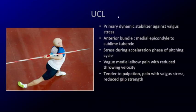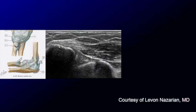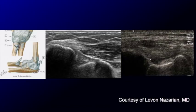The ulnar collateral ligament — deep to the common flexor tendon — can also be injured. We think of this as the Tommy John ligament, affected in pitchers, but javelin throwers can also get ulnar collateral ligament injuries. Here's the normal anterior band connecting bone to bone. In this example, there's a partial defect in the ligament with fluid filling the defect — this is an ulnar collateral ligament tear.